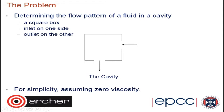The problem is to compute the flow pattern of a fluid in a cavity where flow comes in from the right-hand side and exits at the bottom. For simplicity, we assume zero viscosity. As you'll see in the example, we can actually introduce viscosity into the system. With zero viscosity — which is the default setup of the code provided — there are no vortices in the flow, making it simpler.